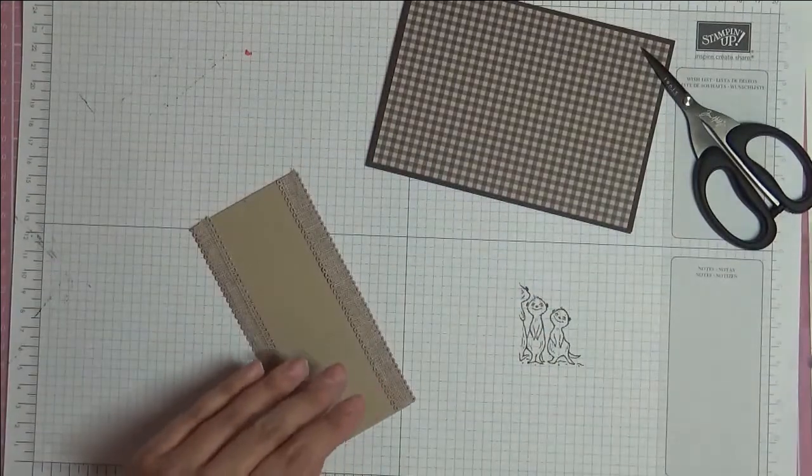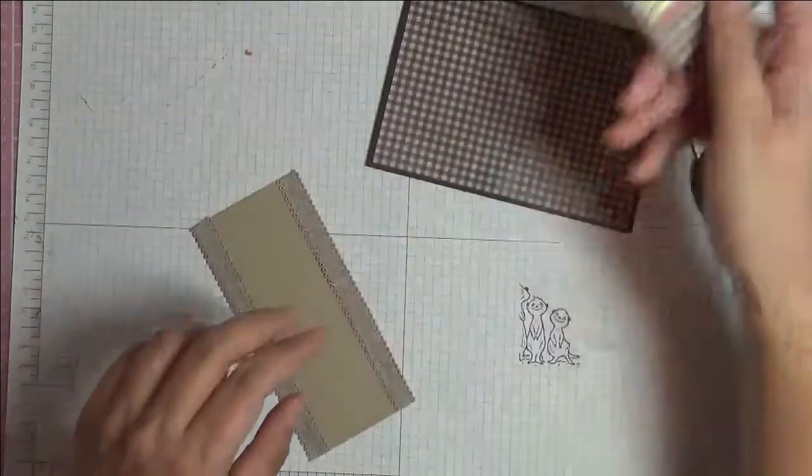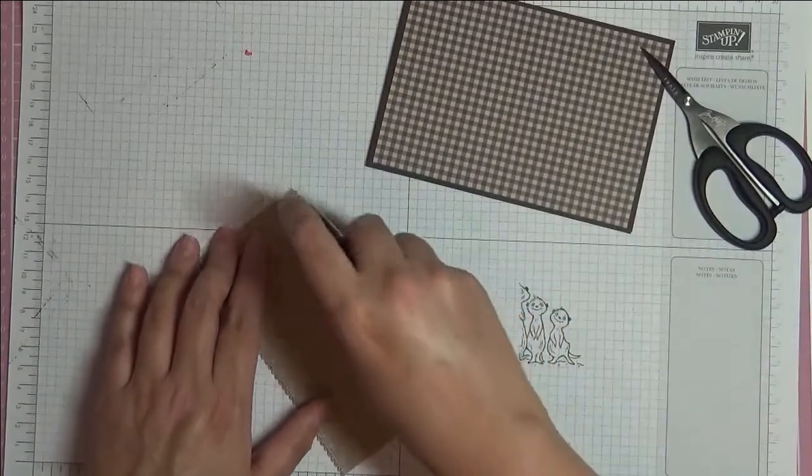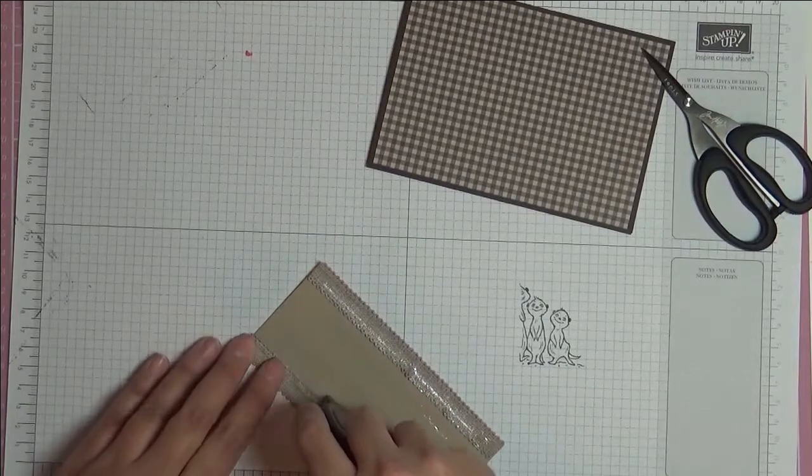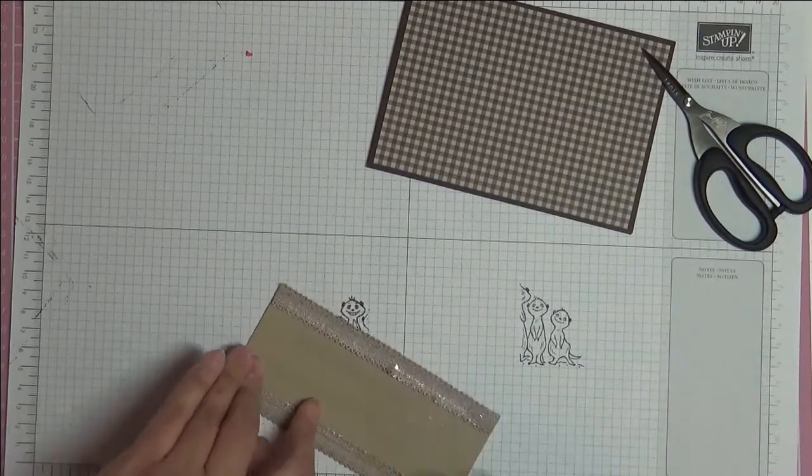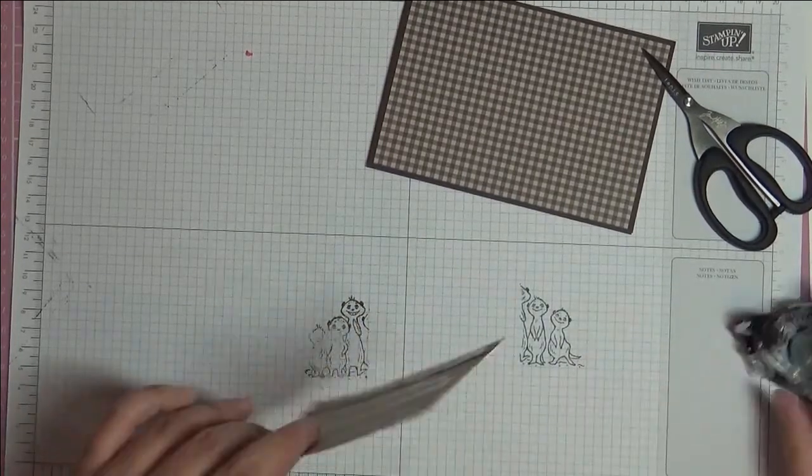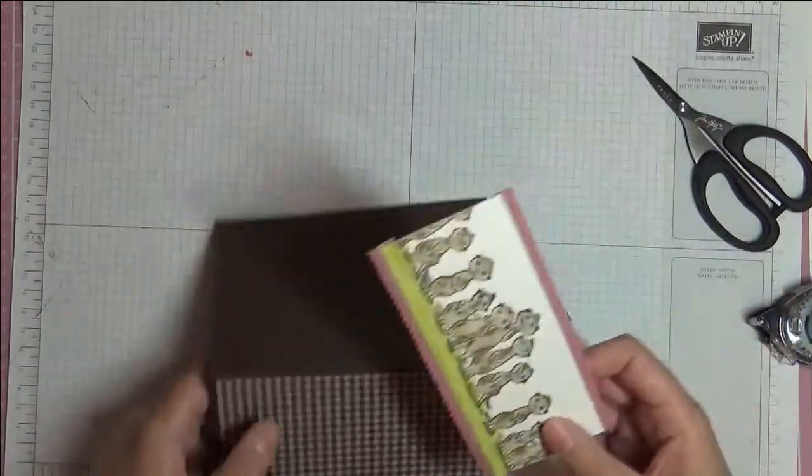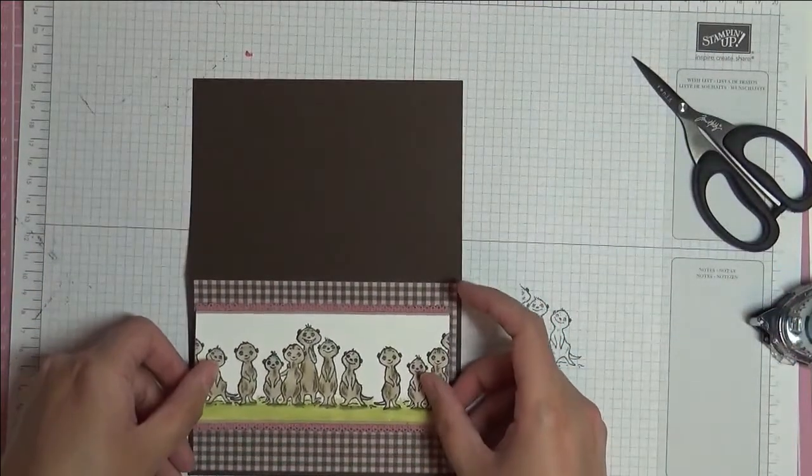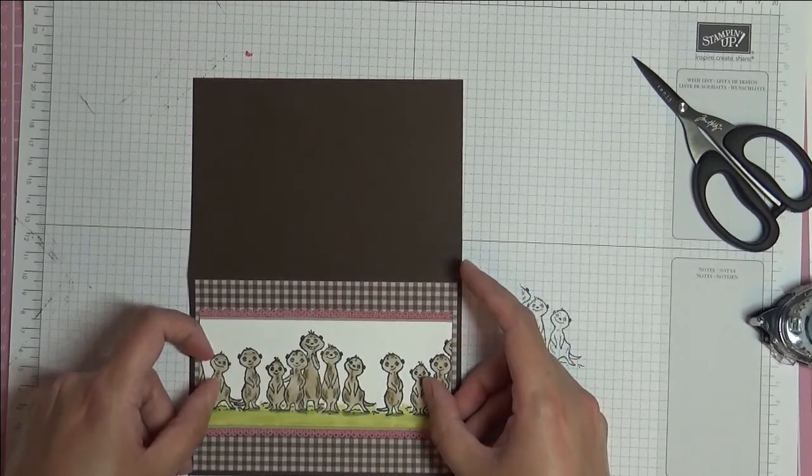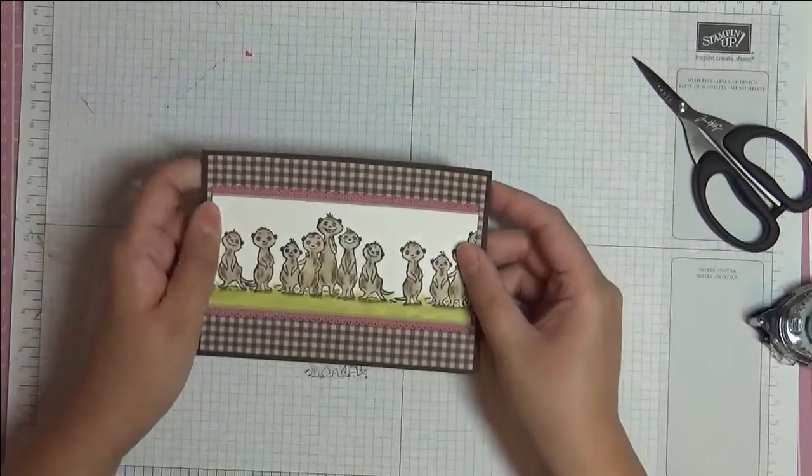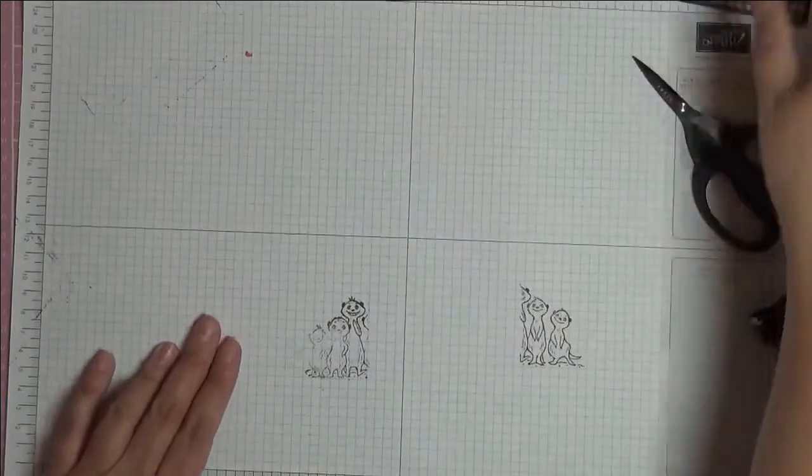I just stuck this down with more Snail. I'm going to put Snail on the ribbon as well so it's all nicely stuck down. Then I'm just going to center this roughly left to right, top to bottom. Something like that. Okay, so let's put that aside.